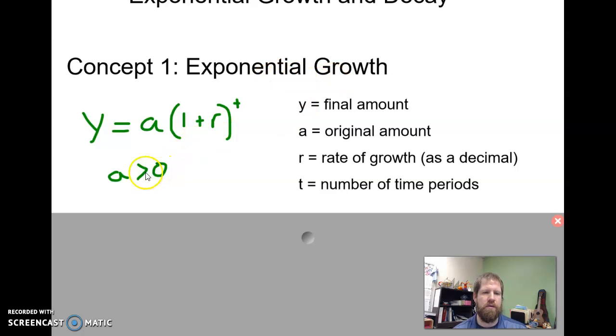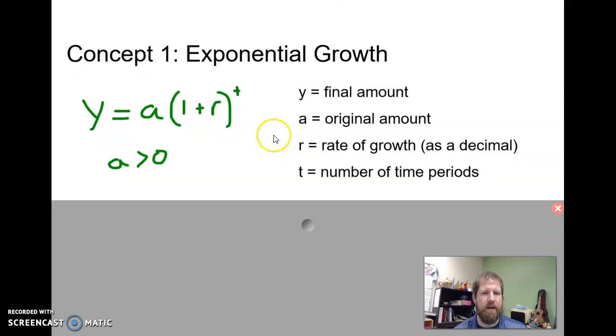For this to be exponential growth, we do have to have a positive a, a starting value that's above zero. Now, the big difference with this is that 1 there, and the reason we have that 1 there is if we had, say, a 50% increase every time period, this would be 0.5. But if I'm multiplying a value times 0.5, it's going to get smaller. So the reason we have the 1 there is so we keep that original value and increase by our rate of growth depending on the number of time periods.